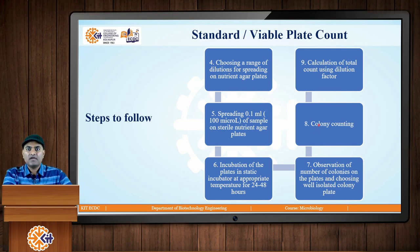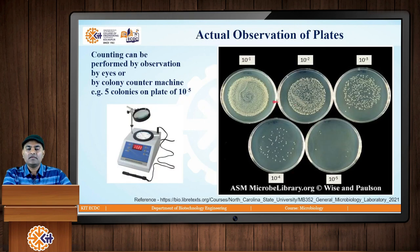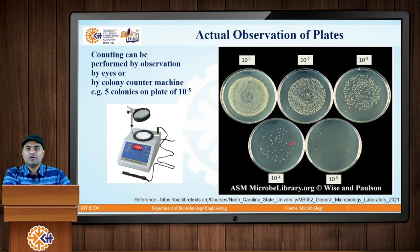Once the incubation is over, we observe the colonies of bacteria grown on the surface of the petri plate and these colonies are counted. Let us see how the plates look. This picture shows different plate statuses from a dilution of 10 raise to minus 1 to 10 raise to minus 5. From 10 raise to minus 1 to 10 raise to minus 5, the number of bacterial colonies reduces. At 10 raise to minus 1, the growth is a mat or crowded growth, and eventually the number of colonies goes down. On the 10 raise to minus 5 plate, by visible observation, you can see 5 colonies grown. Colony counting can be done by direct observation by eye or using a colony counter machine as shown here.